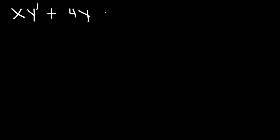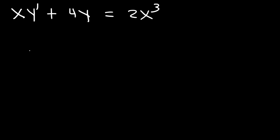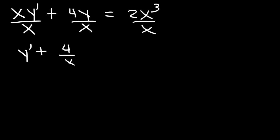Now let's work on another problem: x y prime plus 4y equals 2x cubed. We need to put it in standard form, so we divide everything by x. This gives y prime plus 4 over x times y equals 2x squared — now it's in standard form.